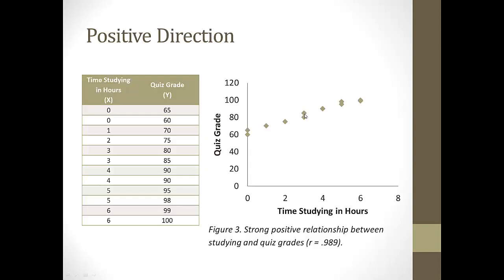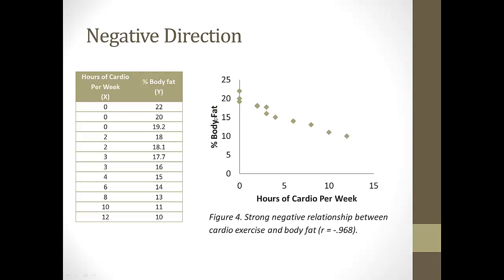Here's another example of the positive direction — study more, higher quiz grades, they're changing in the same direction, and it's pretty consistent. And there's the negative direction again: hours of cardio per week — as that increases, you have less body fat, going the other direction. As hours of cardio decreases, percent body fat increases. It's a negative relationship going in an opposite direction.